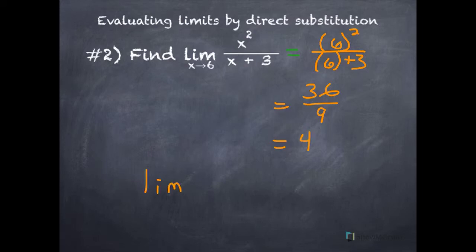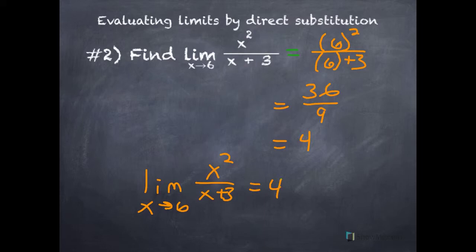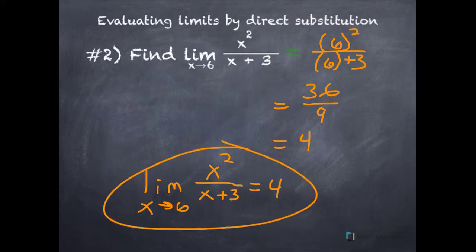Thus, the limit as x approaches 6 of x squared over x plus 3 equals 4.